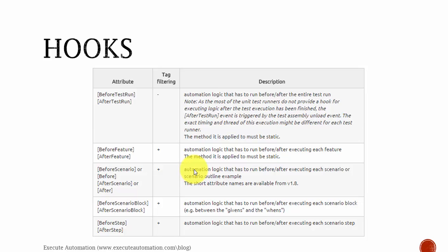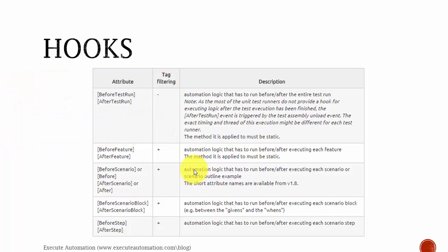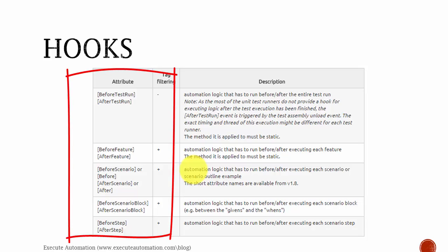Hooks — if you've already worked with Visual Studio, or in Java with TestNG or JUnit, you might have seen attributes like BeforeTest, AfterTest, BeforeMethod, AfterMethod, BeforeTestContext, AfterTestContext. Those are attributes — in Java they're called annotations. They're used by test frameworks to perform some operation before the actual test starts. Similarly, in SpecFlow we call them hooks, and they include attributes like BeforeTestRun, AfterTestRun, BeforeFeature, AfterFeature, BeforeScenario, and AfterScenario.